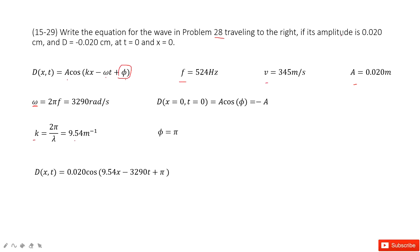So now we can see it tells us if the amplitude is 0.02 cm and D equal to negative of this amplitude as t equal to 0, x equal to 0. So in this one, we can input x equal to 0 and t equal to 0.